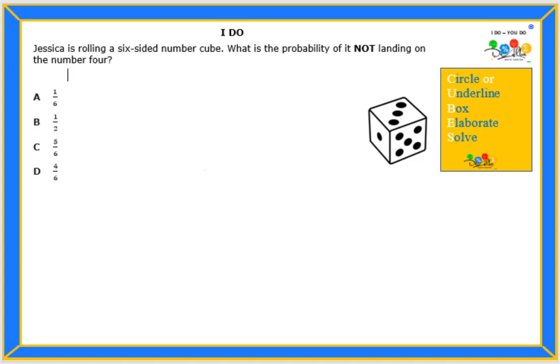Hello students, let's read this problem together. Jessica is rolling a six-dotted number cube. What is the probability of not landing on the number four?